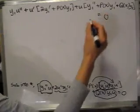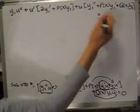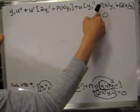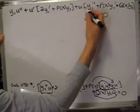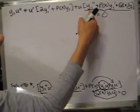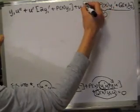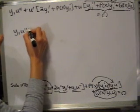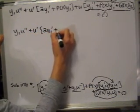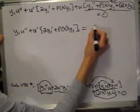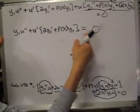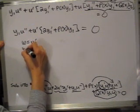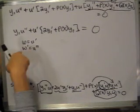Something really nice happens here: the expression in the coefficient of u — y1'' + p(x)y1' + q(x)y1 — is exactly the original differential equation with y1 substituted in. Because y1 is a solution of the homogeneous equation, this whole expression equals zero. So the u term drops out entirely, giving us y1·u'' + (2y1' + p(x)y1)·u' = 0. This is the reduction in order. Making the substitution w = u prime, w prime = u double prime converts this to a first-order linear equation in w.